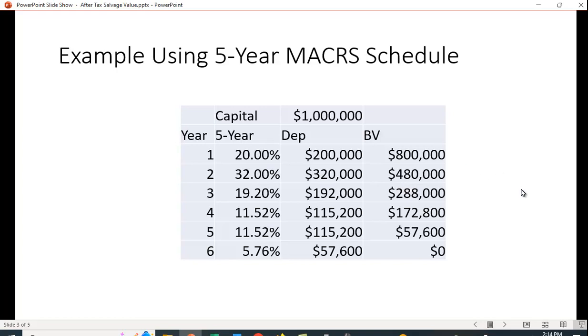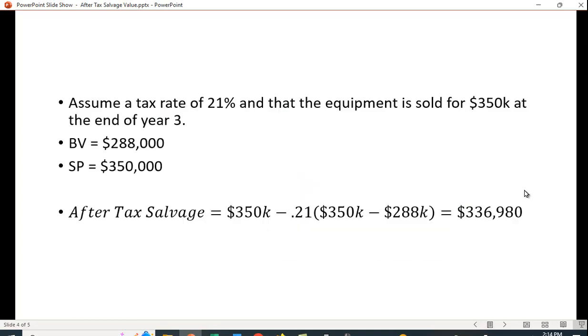Let's take a look at calculating the after-tax salvage value. Suppose the firm is in the 21% marginal tax bracket and they sell a piece of equipment for $350,000 at the end of year three. The book value from the previous table is $288,000. The selling price is $350,000 so the after-tax salvage is going to be $350,000 minus any tax you pay.